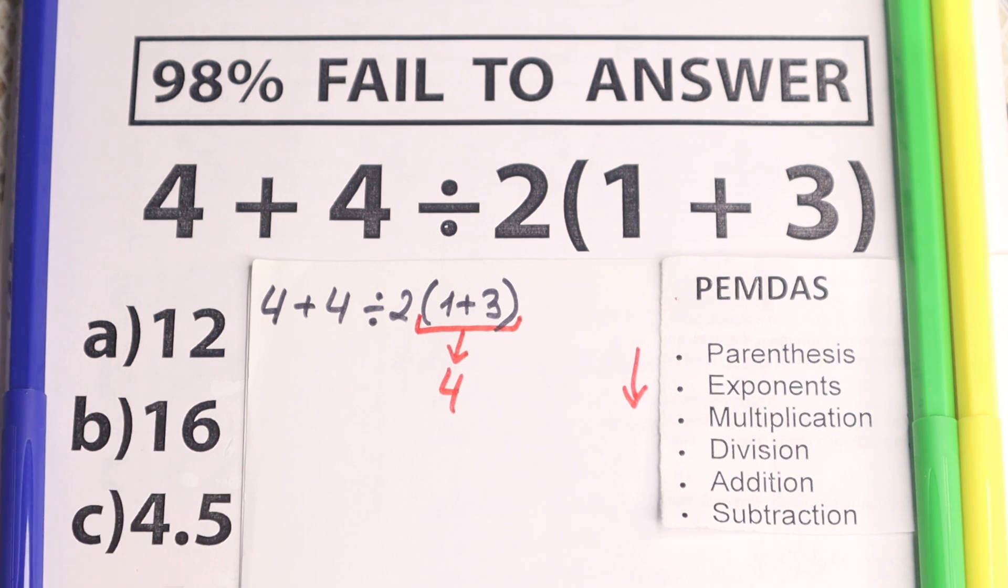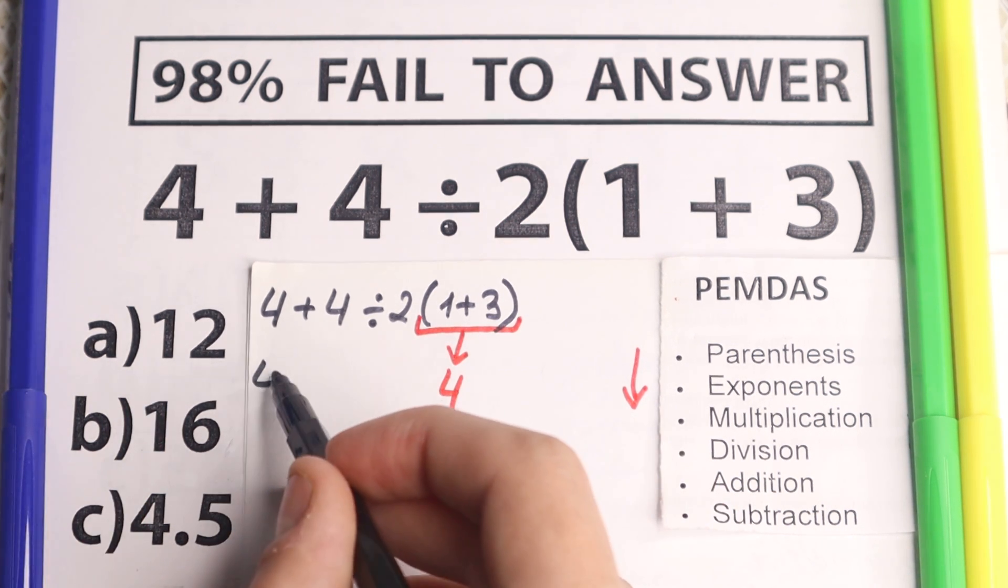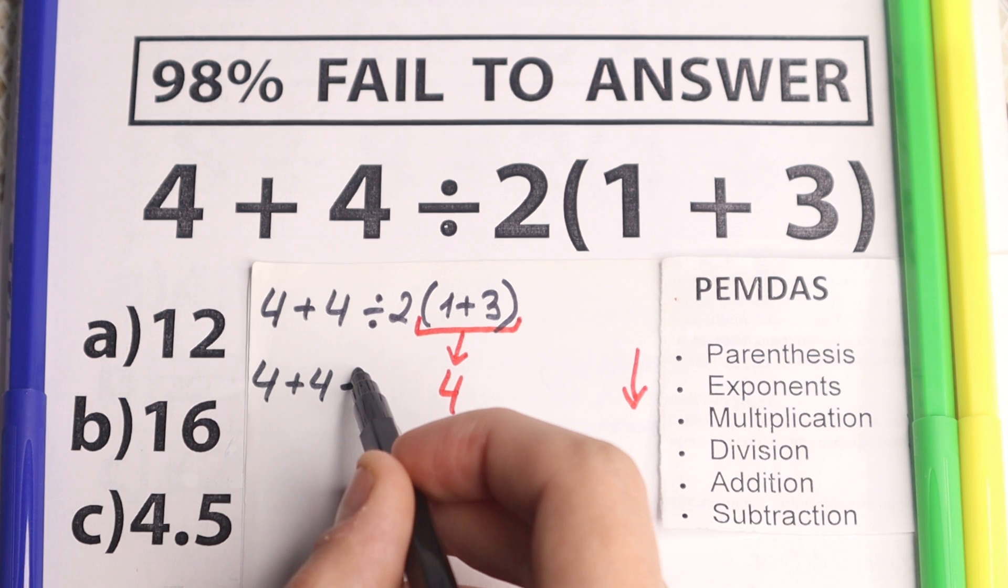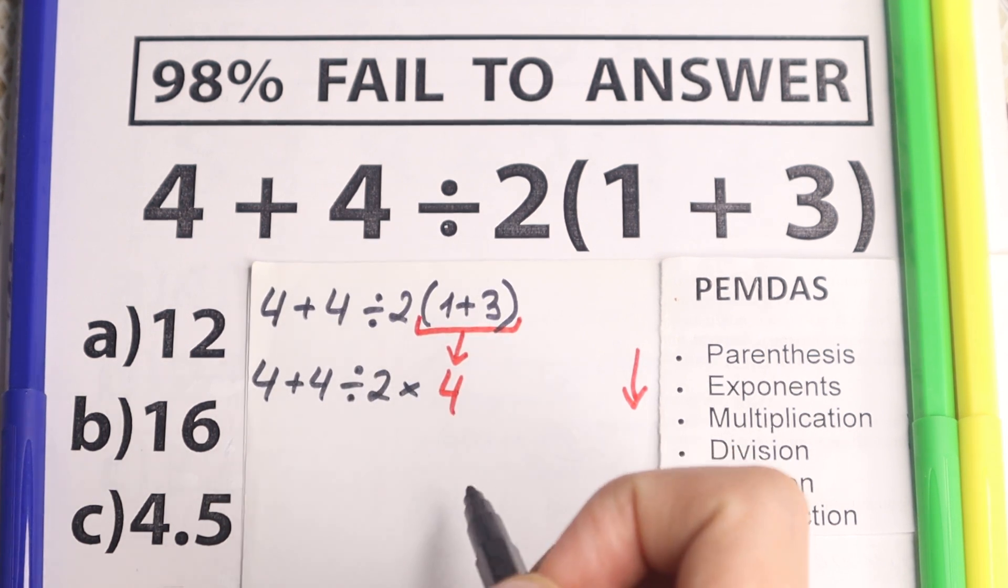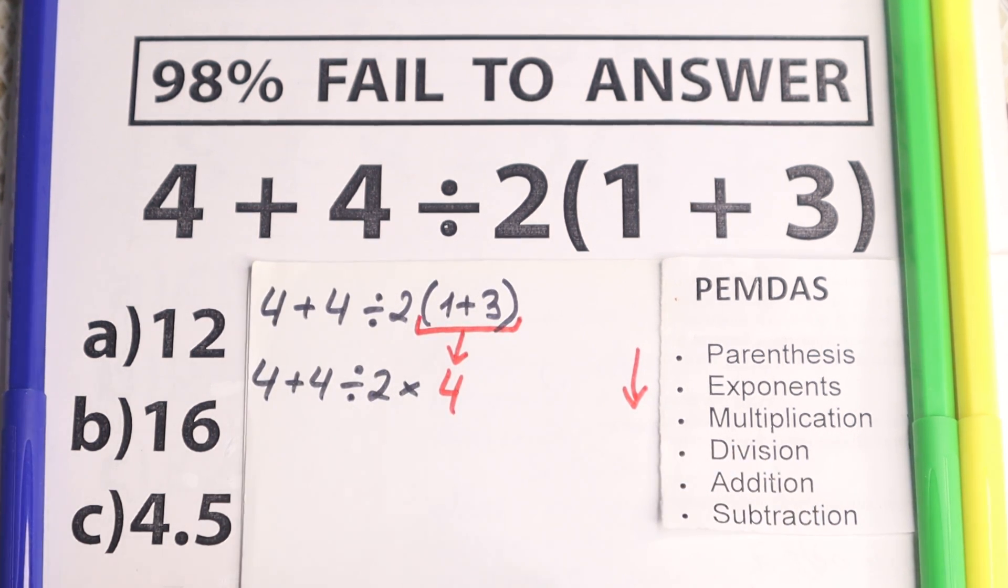And I take my red pen, I just want you to separate this step. So right here we have the same thing, 4 plus 4 divided by 2 and times 4. This is our first really important step right here.